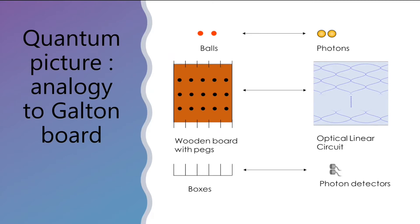Knowing this, what is the analogy between the Galton board and boson sampling? You substitute the balls with photons, small particles of light. You substitute the wooden board with pegs with an optical linear circuit made with beam splitters and phase shifters. And you substitute the boxes with photon detectors that will tell you if there is a photon or not.